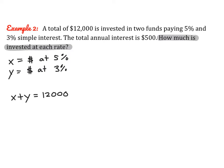We need a second equation because we have two variables. The total interest is $500 — the first account pays 5% of x dollars (0.05x), and the second pays 3% of y dollars (0.03y), so 0.05x plus 0.03y equals 500. To make our lives a little easier, I'm going to clear the decimals by multiplying both sides by 100, which I would always recommend doing.